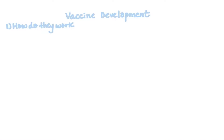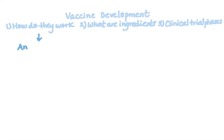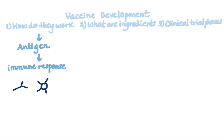Now for the different steps of vaccine development. Number one: how do vaccines work? All vaccines contain an active component known as the antigen, which generates an immune response, or the blueprint for making this active component, so our body is prepared if exposed to a specific pathogen in the future. To illustrate, I'm drawing an antibody — depicted as a Y shape — with a microbe adjacent to it. The lighter blue dots represent the antigen the microbe carries.